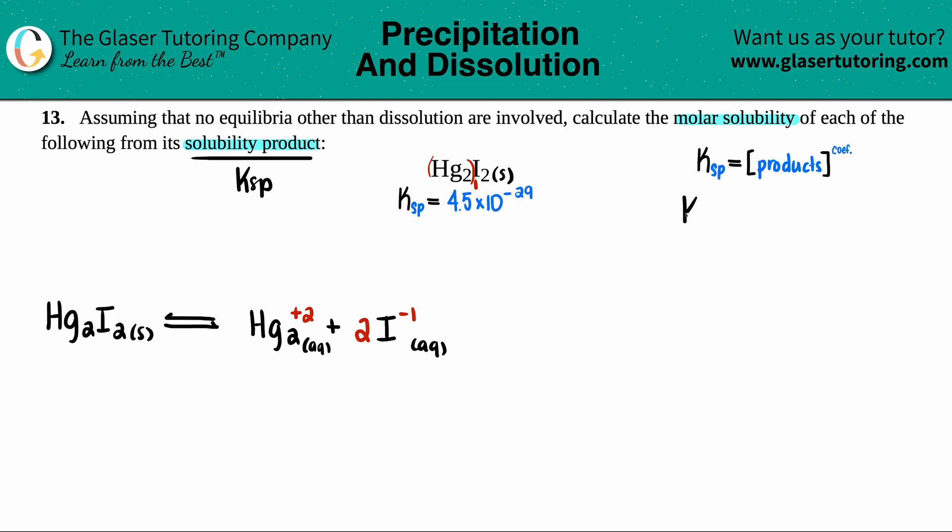It's just equal to the concentration of the products raised to the coefficients. Only products because your reactants are solids in Ksps. No solids allowed. So Ksp equals the concentration of the Hg₂²⁺ times the concentration of the I⁻. But remember, you have to raise it to the coefficients. There was no coefficient in front of the Hg₂. That means that there was one of them. So you could raise this one to the first, but that's going to be the same number. But for the I, you definitely have to raise it to the second power because there was a two coefficient here.